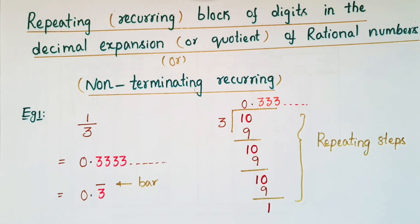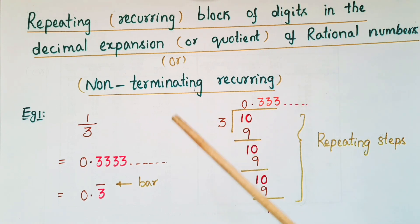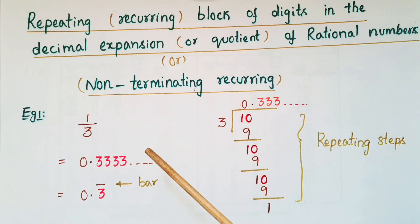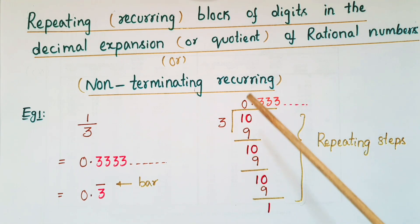Hello everyone. Today I am going to explain the repeating or recurring block of digits in the decimal expansion of rational numbers. Suppose if we want to convert a rational number 1 by 3 into a decimal number.